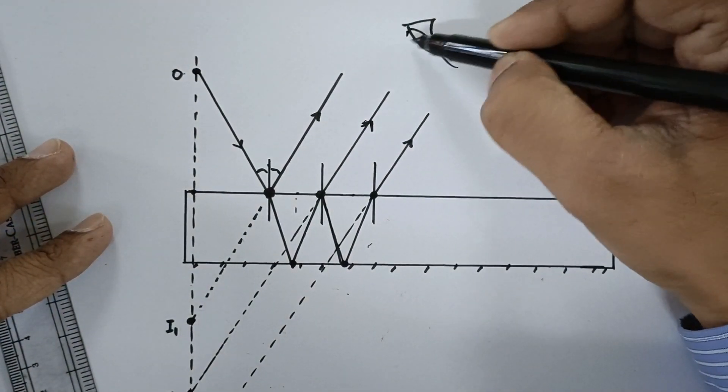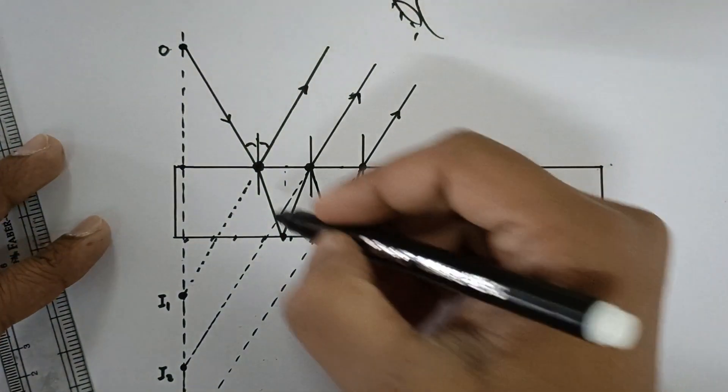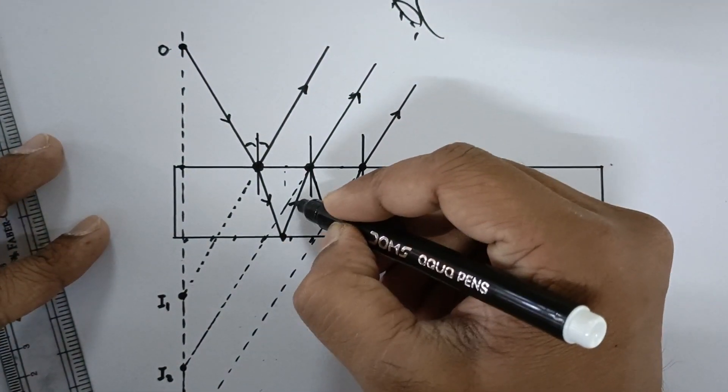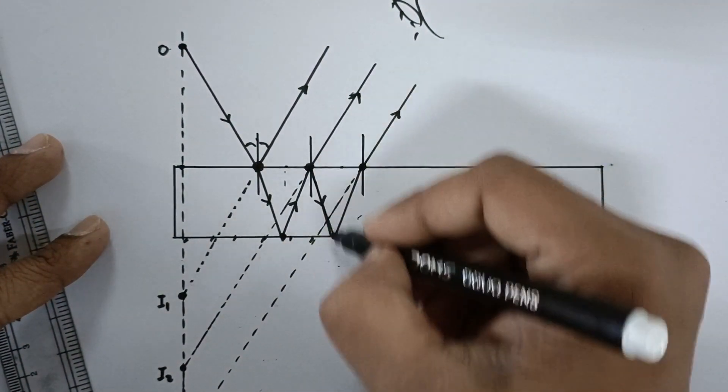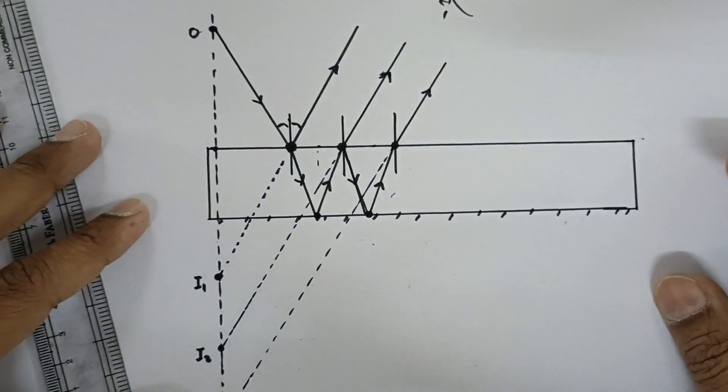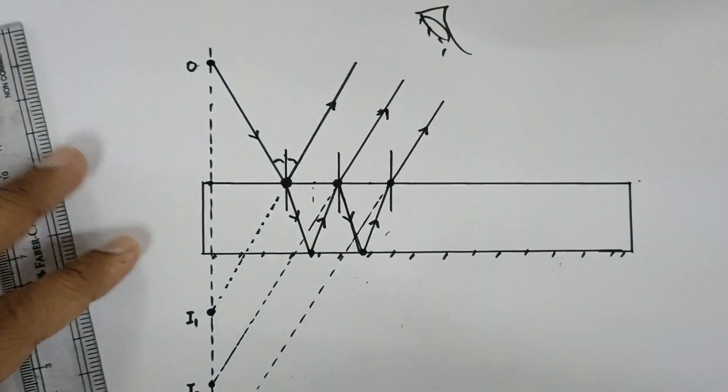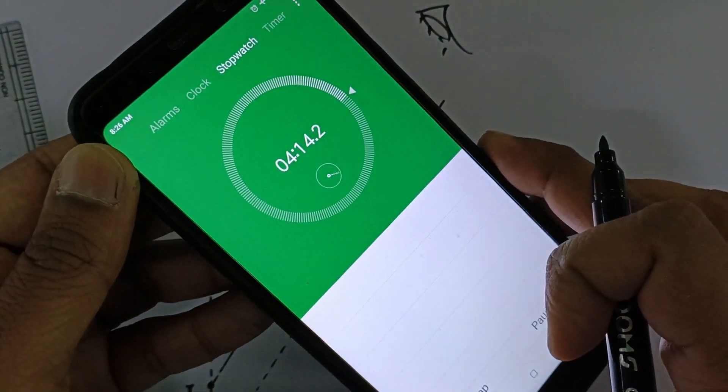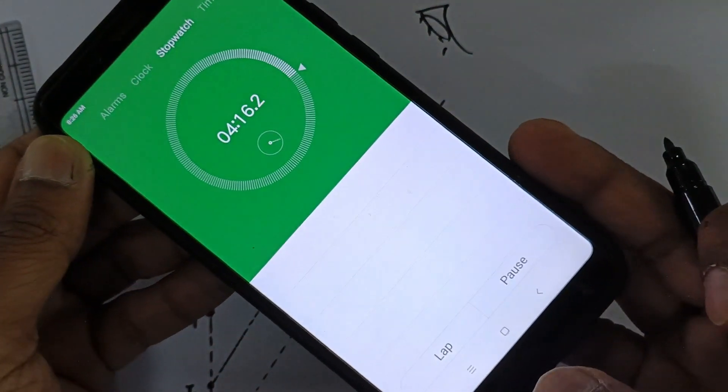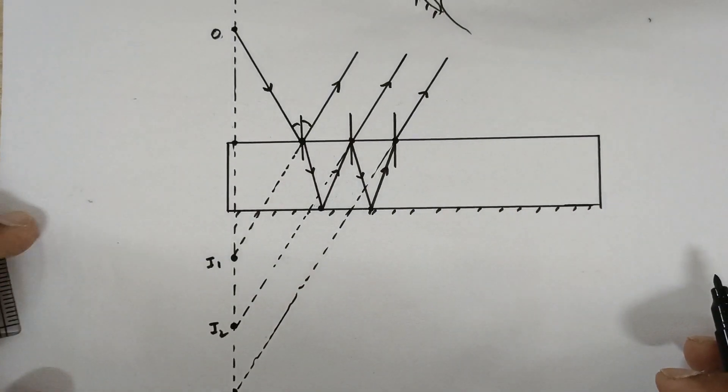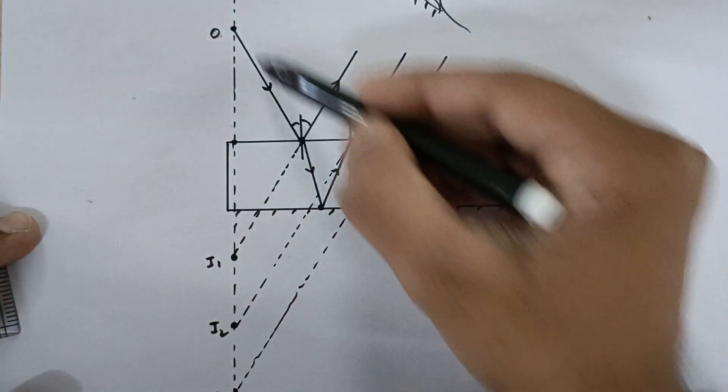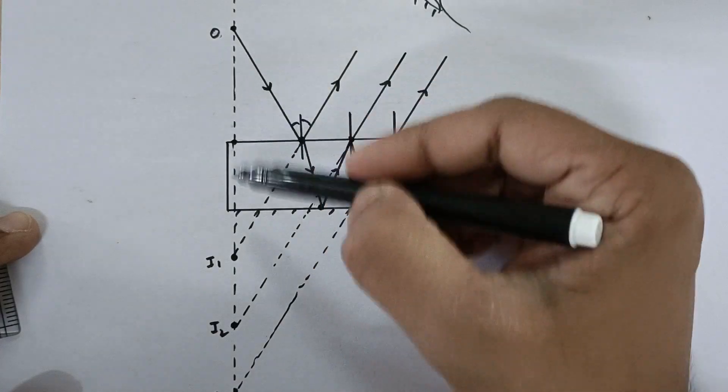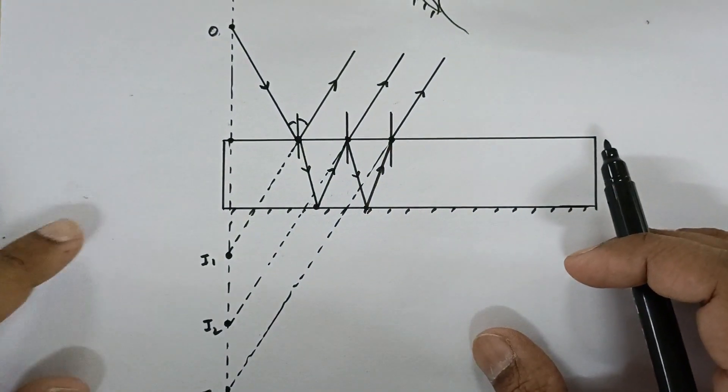Now I will draw one more eye over here, that is the observer. I should mark the reflected rays. The timer is about 4 minutes and 14 seconds and we did it. Now you have to take care about one thing, that this triangle and this triangle should be appearing almost congruent.